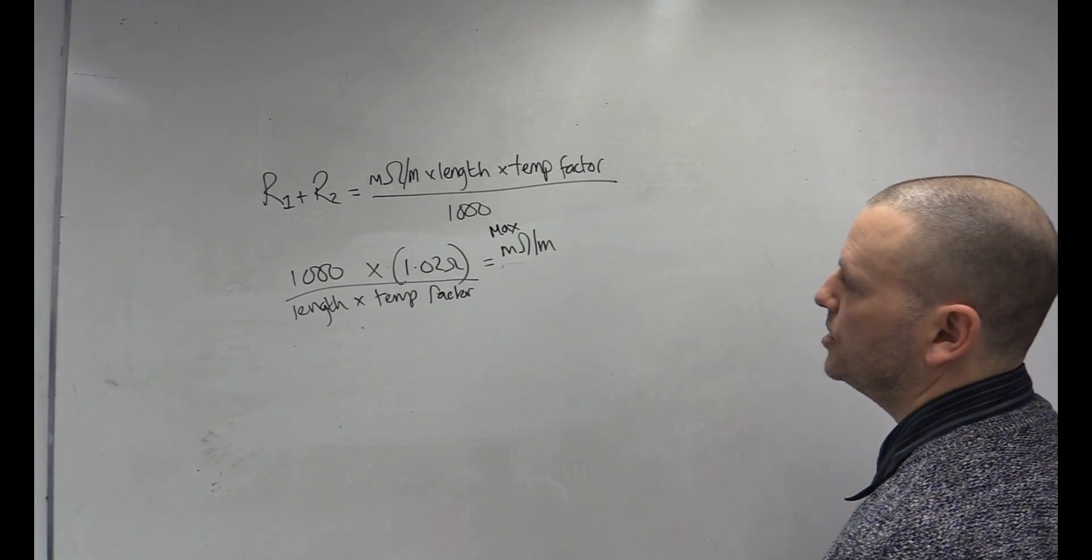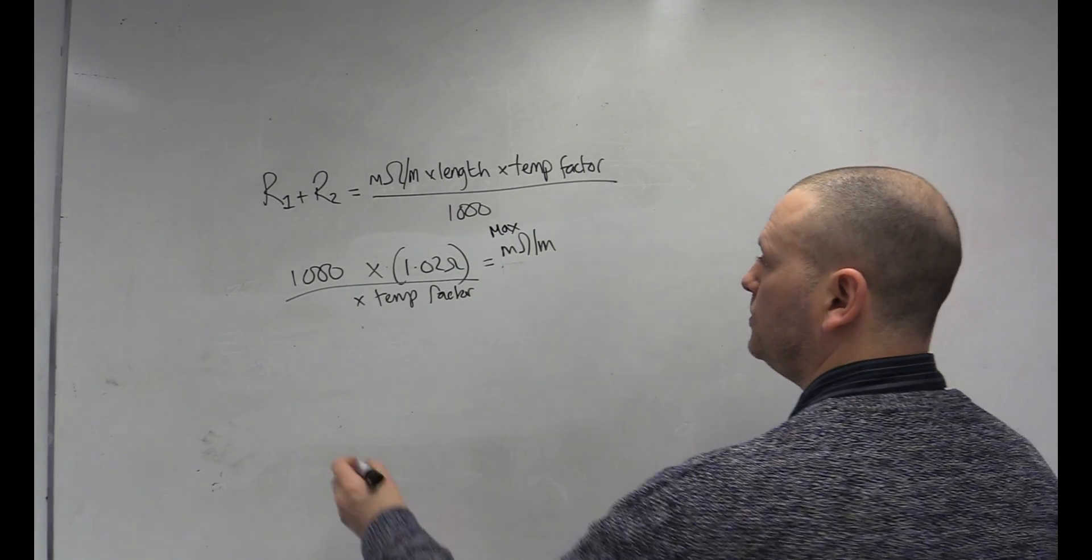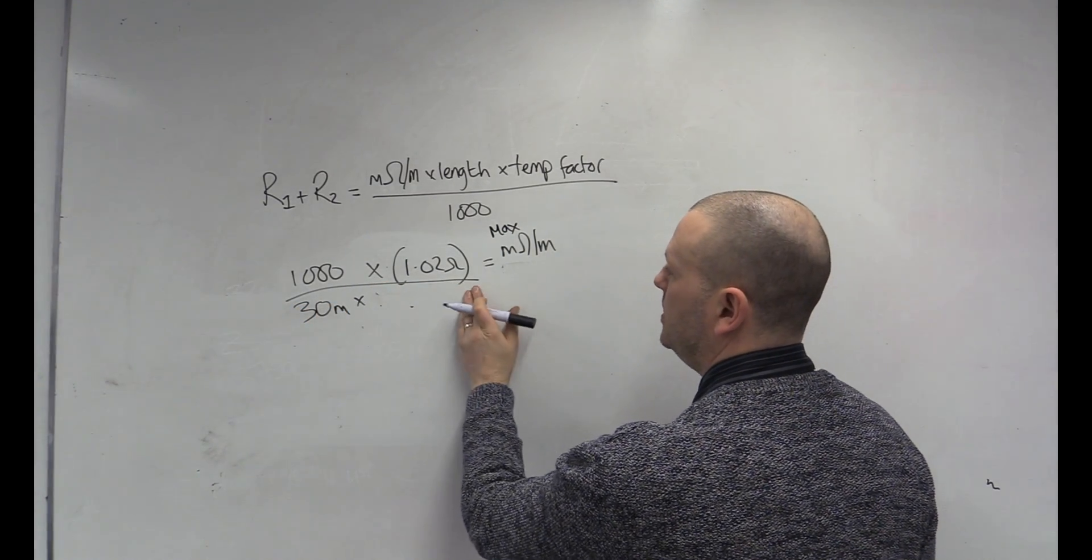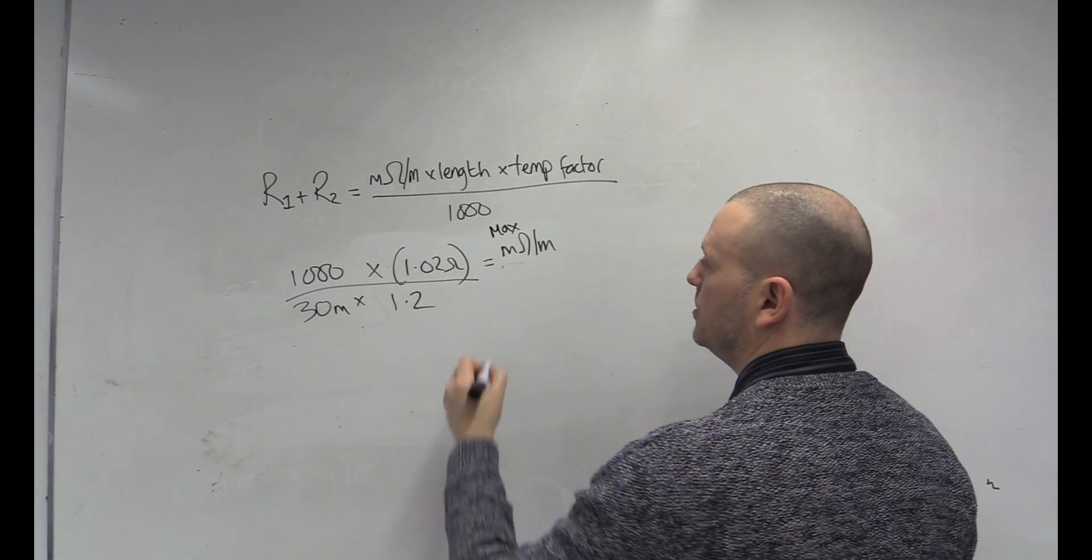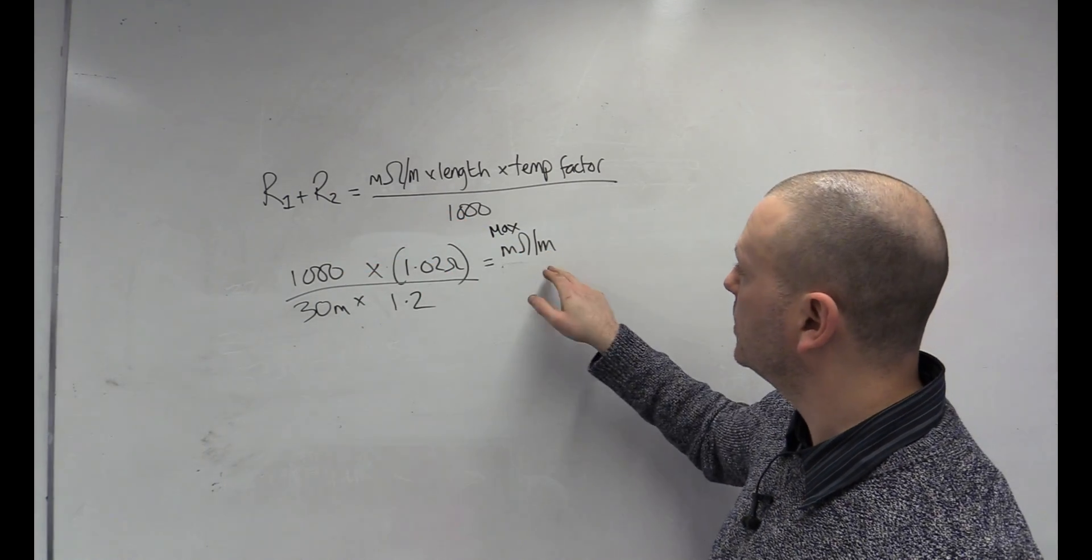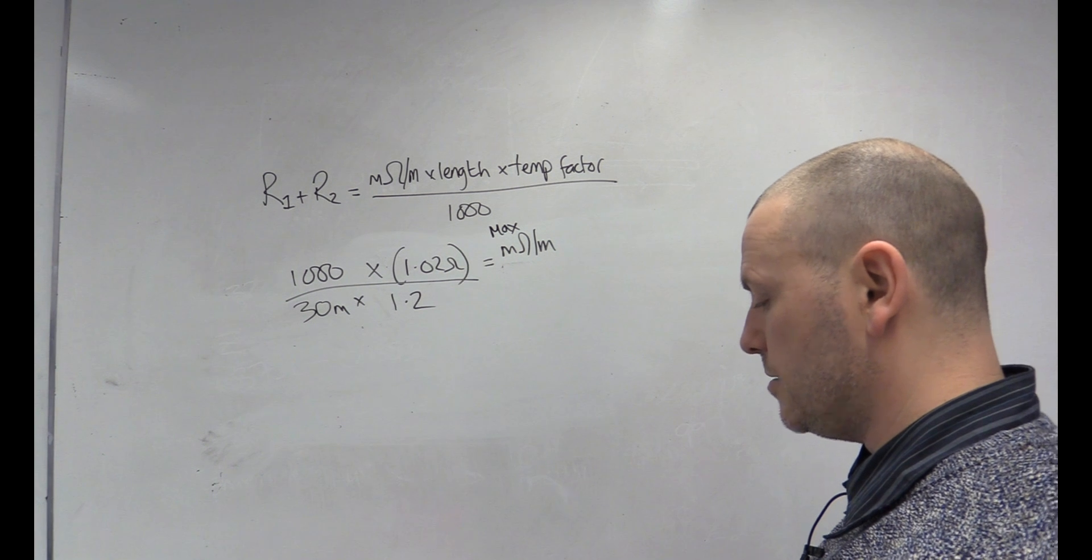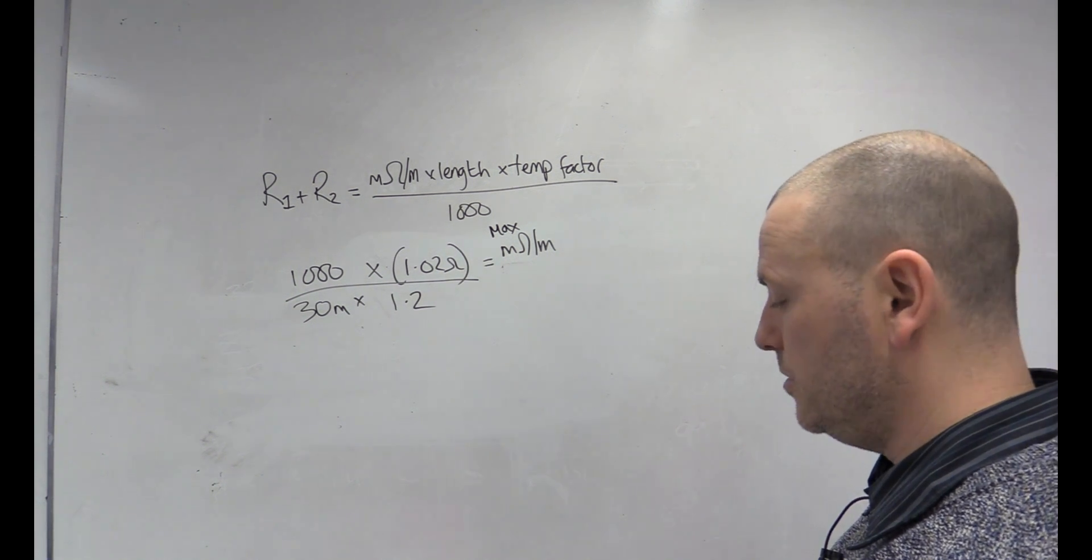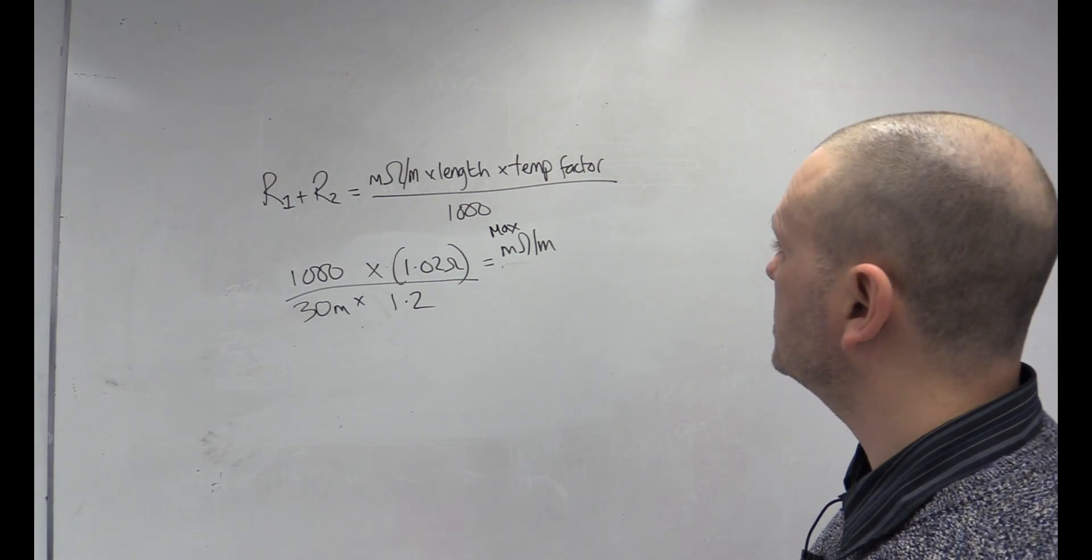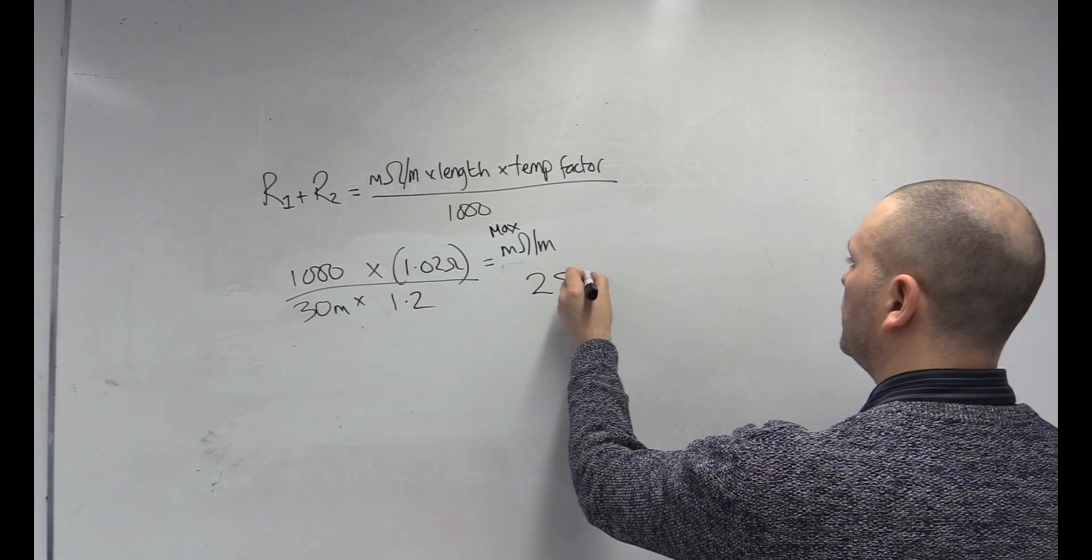So, shall we keep our length? Yes. 30 meters. And shall we keep our temp factor? Yes, because it's the same cable we're going to use at 1.2. Now, we've got numbers this side, so we can equate that and work out what our maximum milliohm per meter value is. So, 1,000 times 1.02 divided by 30 times 1.2 gives us a maximum milliohm per meter number at 28.33.